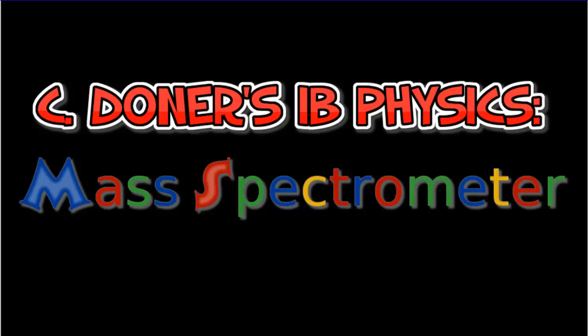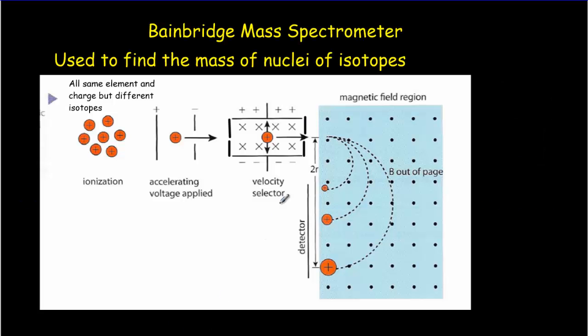Let's have a look at how a mass spectrometer works. We're going to focus on the Bainbridge mass spectrometer, and it has four basic regions. It has an ionization region, an accelerating plates region, a velocity selector region, and then a region where the isotopes are separated.